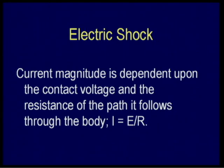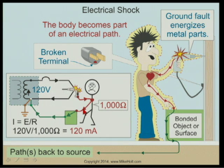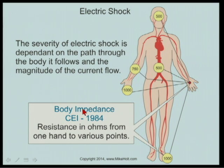Current - how many amps traveling through your body - depends on the contact voltage and the resistance of the path through the body. The body's resistance is 1,000 ohms, per the CEI 1984 standard: hand to hand or hand to feet is 1,000 ohms - we'll use the worst case. Hand to hand could be more than 1,000 ohms - maybe 5,000 or 10,000 ohms - but it could be a lot less depending on whether you're wet, have rough hands, are gripping or just touching. We work with 1,000 ohms as the standard.